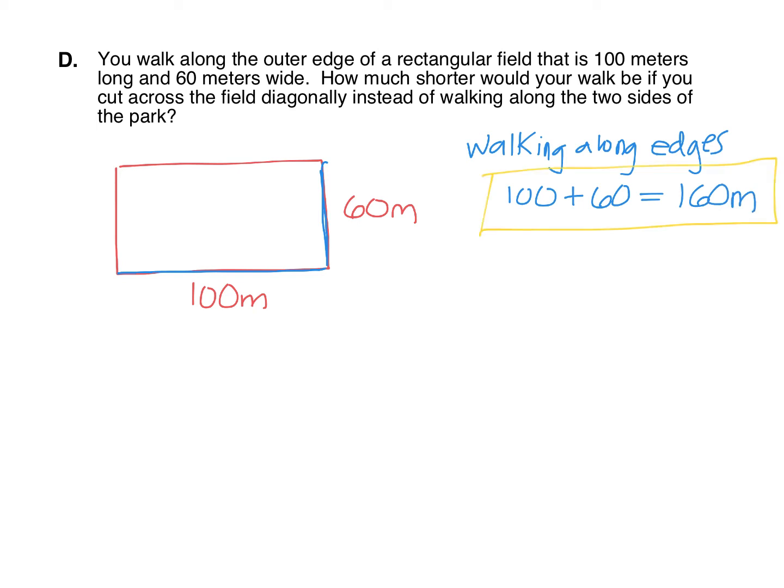We're wondering, though, how much shorter would it be if you want to start here and end there? What if you just cut diagonally across the field? Well, that makes a right triangle because a rectangle has four right angles. And now our missing side, the diagonal, is C.